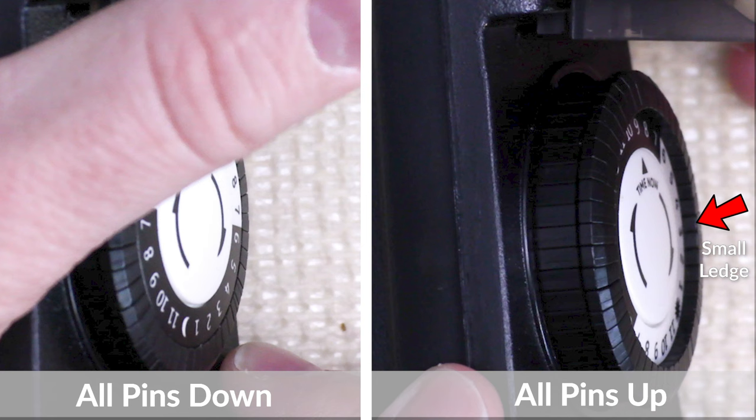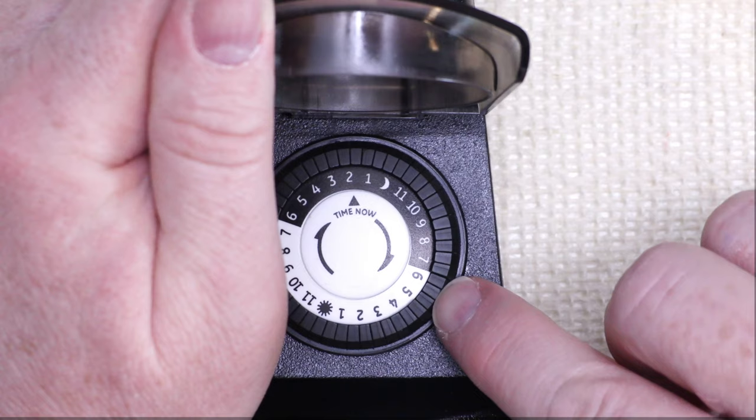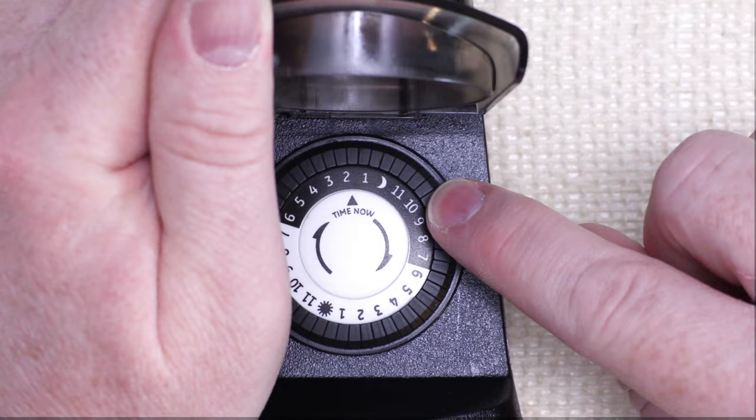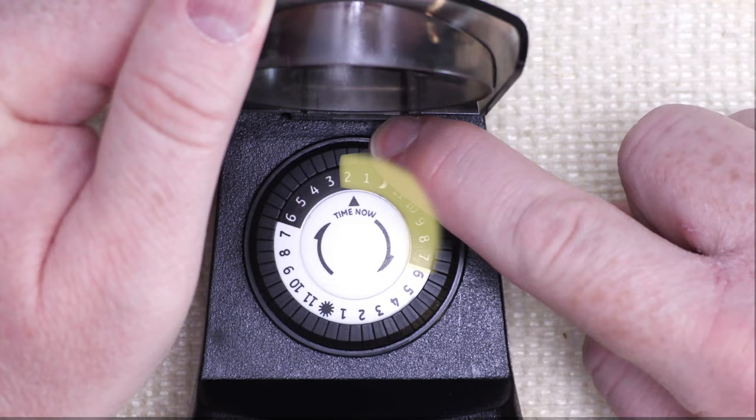Let's set the timer. To set the timer, you just push down on the notches in the time range that you want to set it. For example, I want mine to be on from 6 p.m. to about 2 a.m. So I'm going to push down all the notches in between 6 p.m. and 2 a.m.